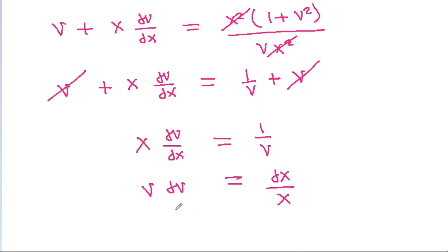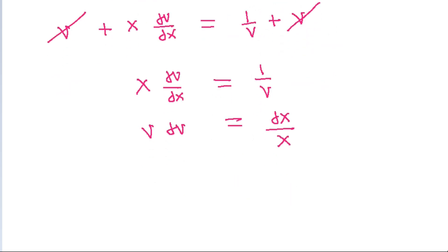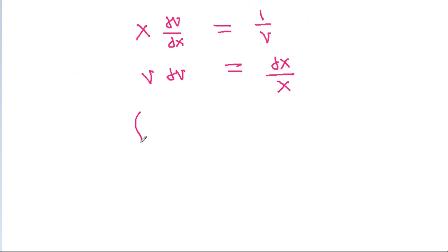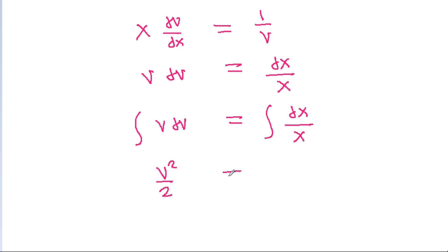If we integrate both sides, the integration of v dv = v²/2, and the integration of dx/x = ln|x| + C. Since y = vx, we substitute v = y/x, giving (1/2)(y/x)² = ln|x| + C.